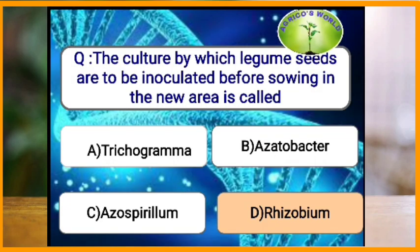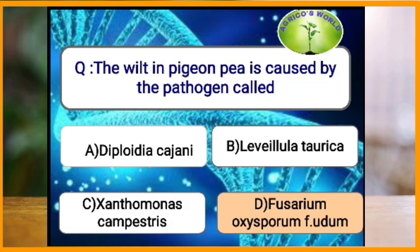The culture with which legume seeds are inoculated before sowing in a new area is called what? Before sowing, legume seeds are inoculated with Rhizobium culture to enhance root nodule formation. The wilt in pigeon pea is caused by Fusarium oxysporum f. sp. udum.